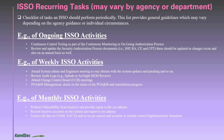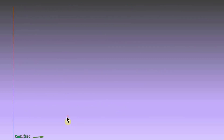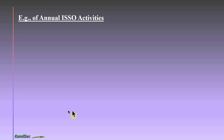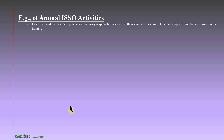Ensure all data in your SIEM, eMASS, or similar tools are current and accurate, including control implementation statements. Go back into those tools regularly to verify that the implementation statements addressing each control are still accurate — because sometimes tools mentioned in implementation statements are no longer used in the environment, and you need to update those to reflect the current tools.